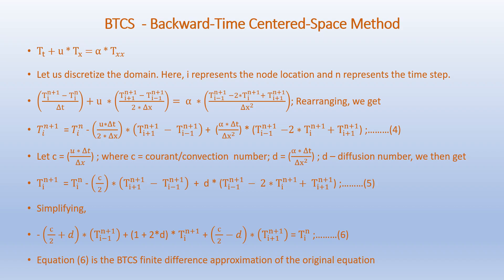We can rearrange this equation as shown in equation 4. Defining c equal to u times delta t over delta x as the convection number, and d equals alpha times delta t over delta x squared as the diffusion number, we get equation 5. This can be simplified further to equation 6: (minus c/2 plus d) times T_(i-1)^(n+1) minus (1 plus 2d) times T_i^(n+1) plus (c/2 minus d) times T_(i+1)^(n+1) equals negative T_i^n. Equation 6 is the BTCS finite difference approximation of the original equation.